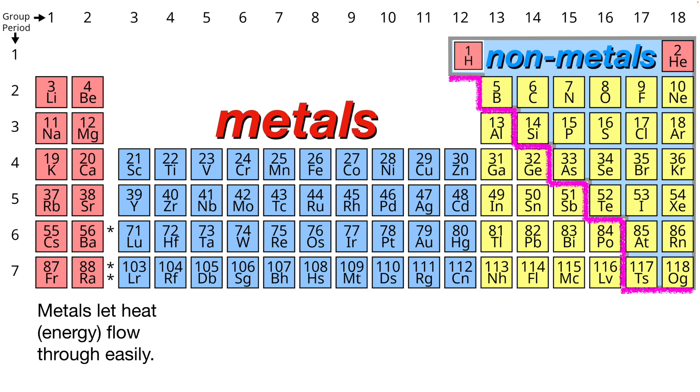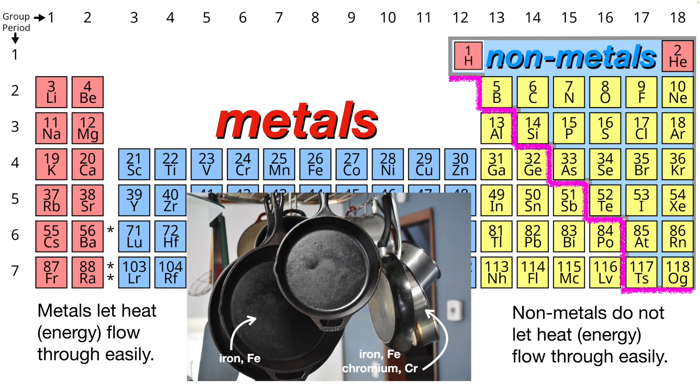Another difference is that metals let heat or energy flow through them very easily. And of course, the opposite, non-metals do not let heat energy flow through easily. Which is why many pots and pans are made of metals. A cast iron is mostly iron, and stainless steel is a mix of iron and chromium.